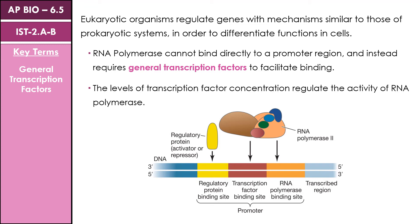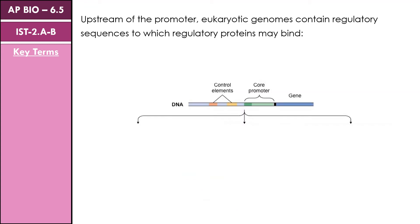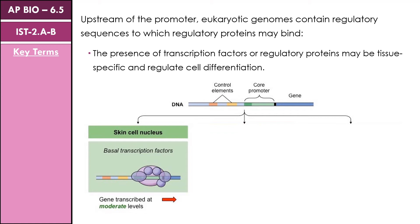So we can control the levels of transcription factors present within the cell in order to regulate the activity of our RNA polymerase. If we do not have those general transcription factors, RNA polymerase is not going to be able to bind and thus transcription is not going to occur. But when we have high levels of transcription factors present, RNA polymerase is going to be able to readily bind to the DNA sequence and transcribe the genes necessary to produce particular proteins. The regulatory sequences of a eukaryotic gene are typically upstream of the promoter and contain a variety of locations where regulatory proteins may bind. Those general transcription factors may be tissue-specific to regulate cell differentiation, so we're able to turn on and off particular genes depending on which type of cell we are in.